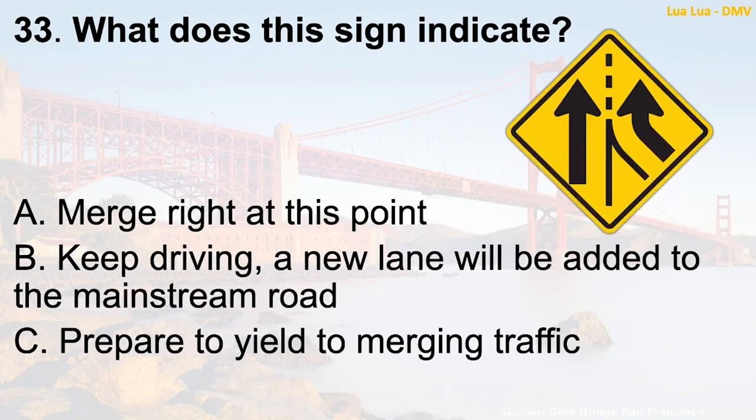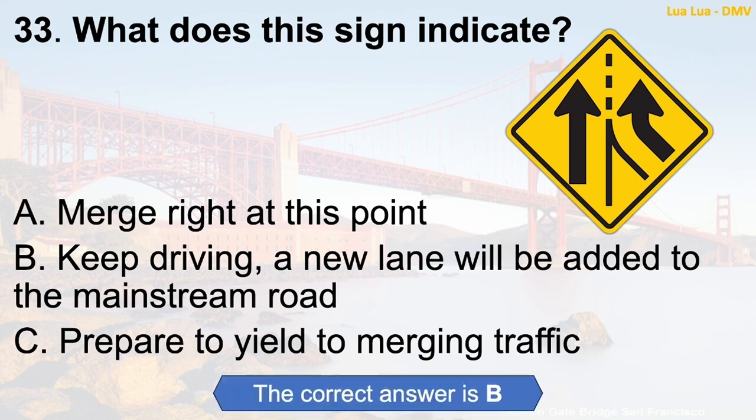Question 33: What does this sign indicate? A. Merge right at this point. B. Keep driving — a new lane will be added to the mainstream road. C. Prepare to yield to merging traffic. The correct answer is B: Keep driving, a new lane will be added to the mainstream road.